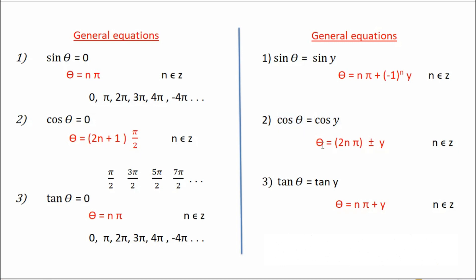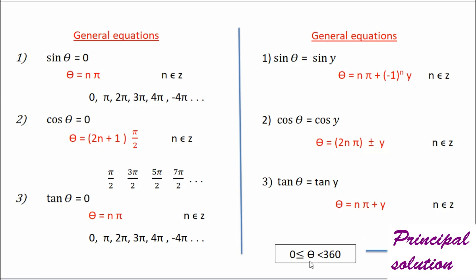When cos θ = cos y, the relation is θ = 2nπ ± y, where n belongs to integers. When tan θ = tan y, θ = nπ + y. These are all the general equations from which we derive the principal solution. The principal solution requires all values of θ to exist between 0 and 360 — greater than or equal to 0, but strictly less than 360.